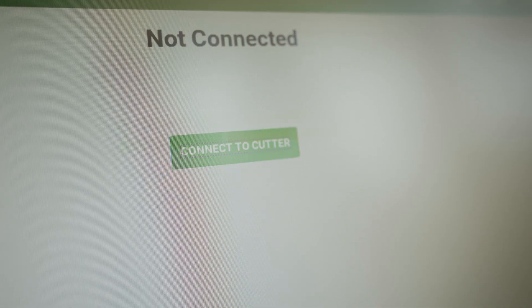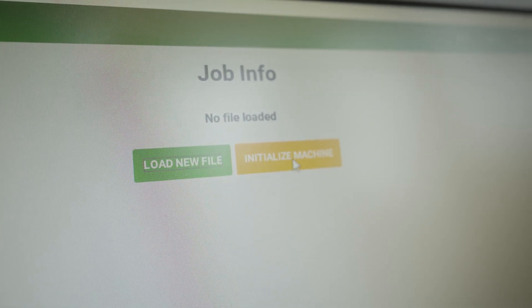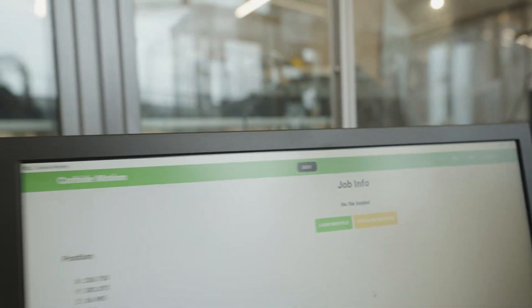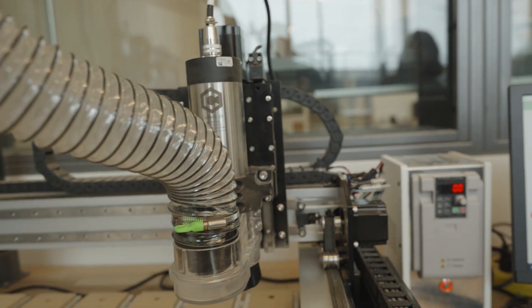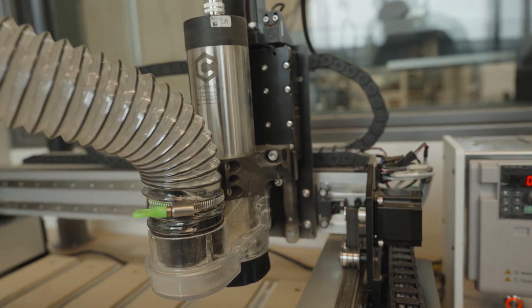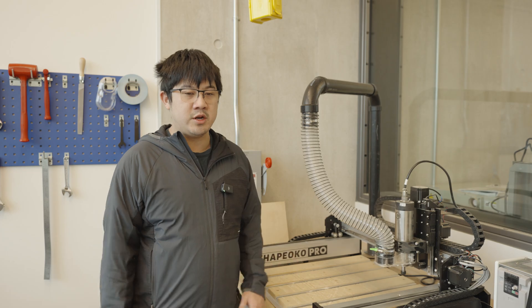After that, we're going to go to the computer, which then controls the machine, and click connect to cutter. Now, after the computer has been connected to the cutter, we're going to click initialize machine, and that's going to home our machine. It's going to move around and go to the top right corner. Once it stops moving and there's no error messages, it's done, and it's going to be ready to go.